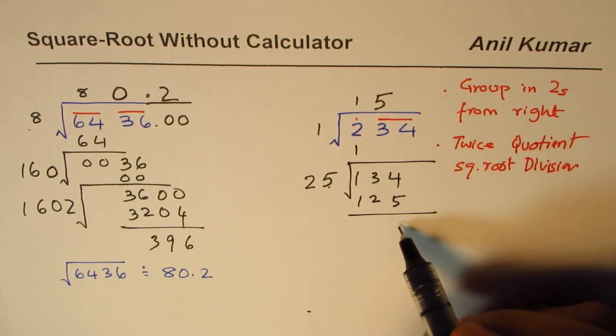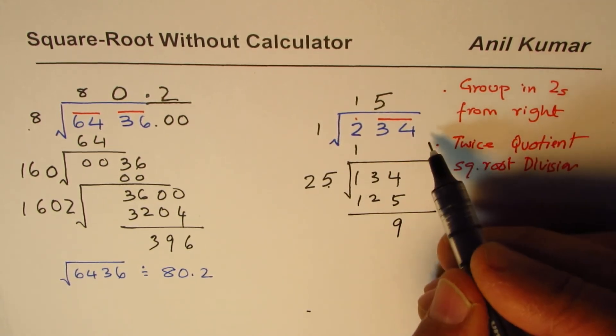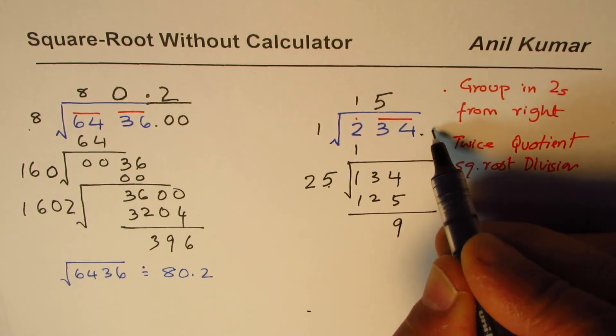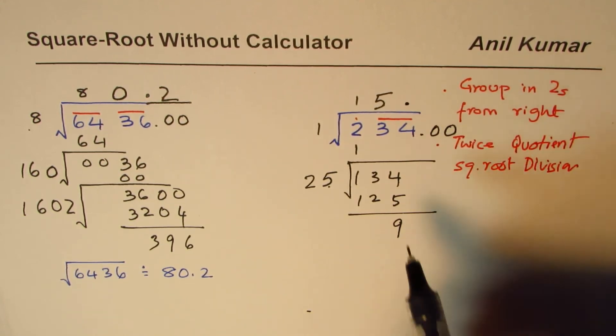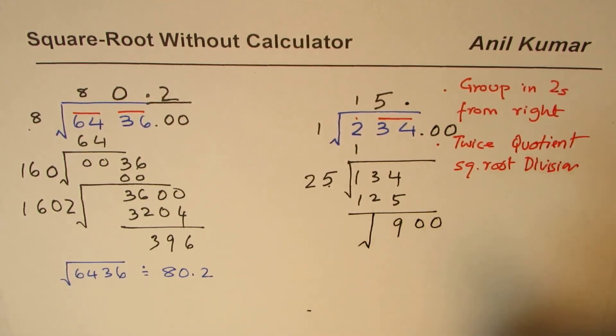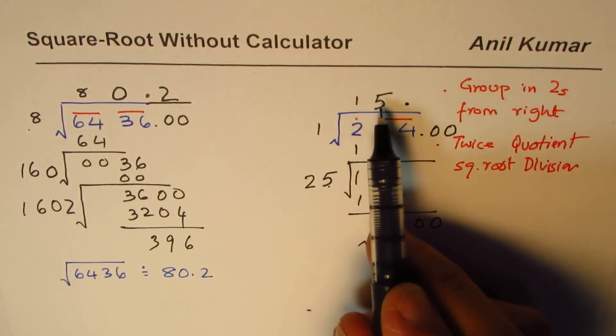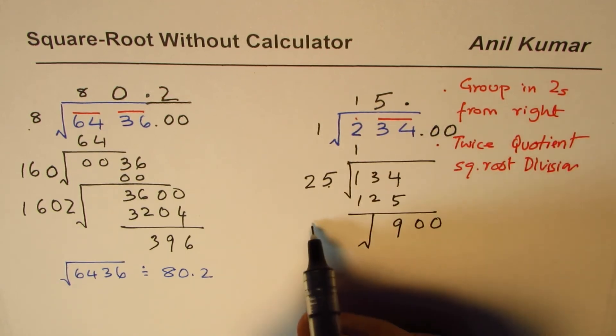That gives you 9. If you want to go further you have to place decimal with two zeros, a decimal in the quotient also. Bring down these two zeros, continue the process - twice 15 is 30.